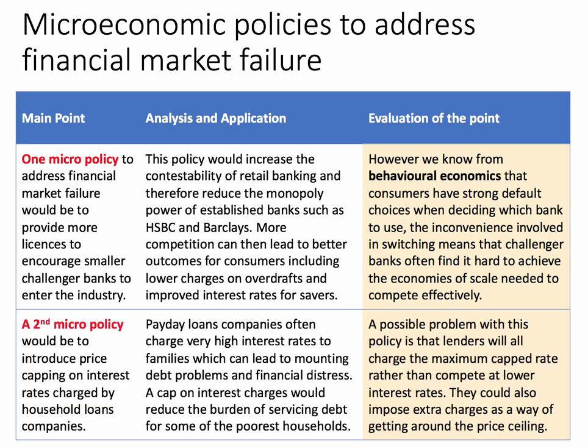Build another point — always make the point, analyse, then evaluate. A second micro policy would be to introduce price capping, perhaps on the interest rates charged by payday loans companies such as Wonga. These companies often charge very high annual percentage rates to families, which can lead to mounting debt problems and financial distress. A cap — a ceiling on interest charges — would lower the burden of servicing debt for some of the poorest households. You can make a case that a cap limits monopoly profits and achieves a greater degree of equity and fairness in financial services.